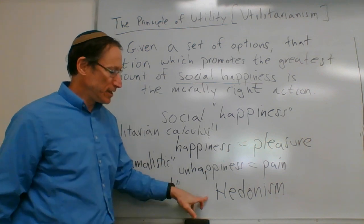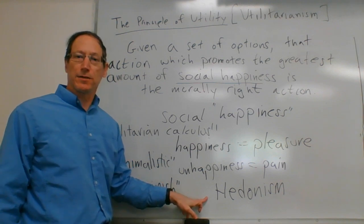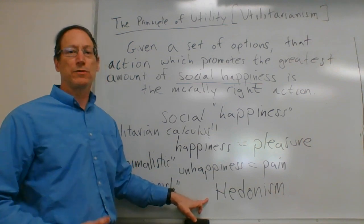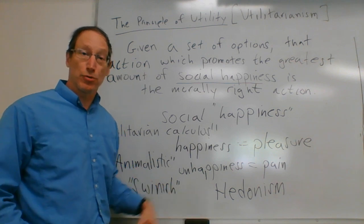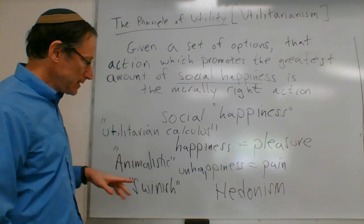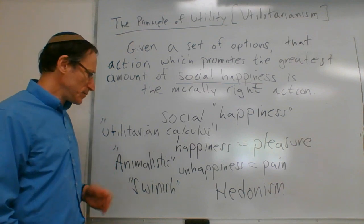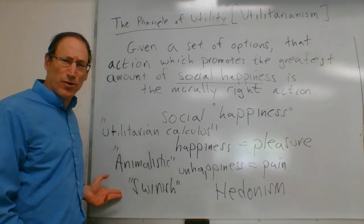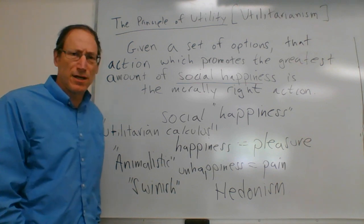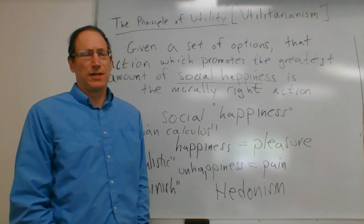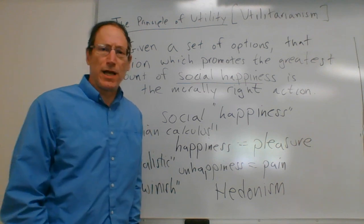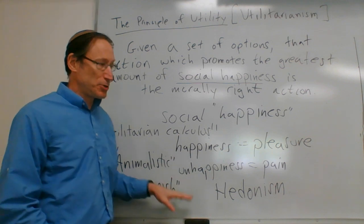Mill believes in hedonism — the view that pleasure is what is good, what we want, what we should want, and what we should promote. An objection to this, which Mill himself considers, is that this sounds animalistic or swinish: how could the purpose of morality be to go around promoting pleasure? That is hedonistic, and surely a hedonistic account of morality cannot be correct.